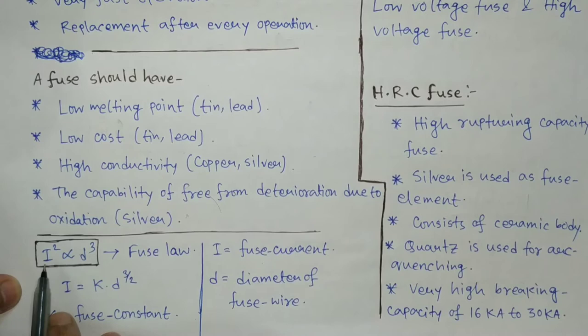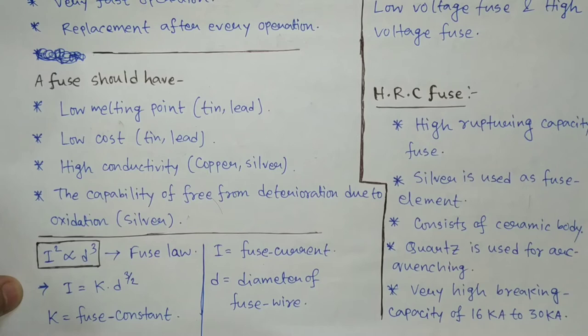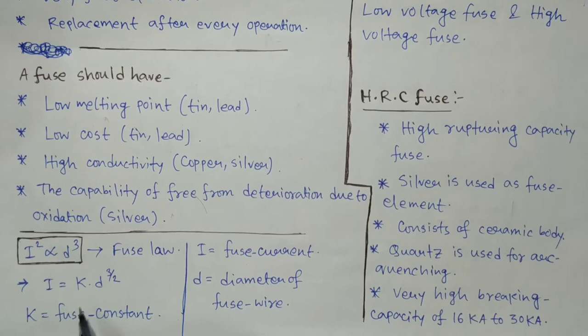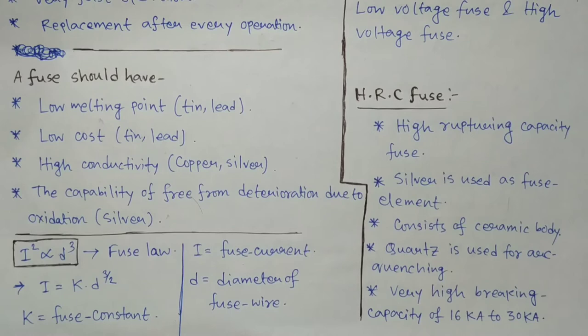Now let's discuss fuse law. I squared is directly proportional to the cube root of d, where I is your fuse current and d is the diameter of fuse wire. Fuse current is the minimum current at which the fuse gets melted and disconnects the circuit. We can also say I equals k multiplied with d to the power 3/2, where k is the fuse constant.